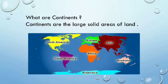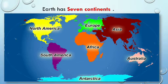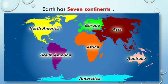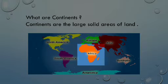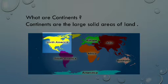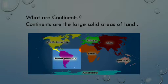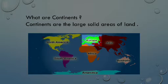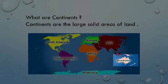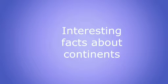So, what are continents? Continents are the large solid areas of land. Earth has seven continents. In order from largest to smallest, they are Asia, Africa, North America, South America, Antarctica, Europe, and Australia. Let me share some interesting facts about continents.